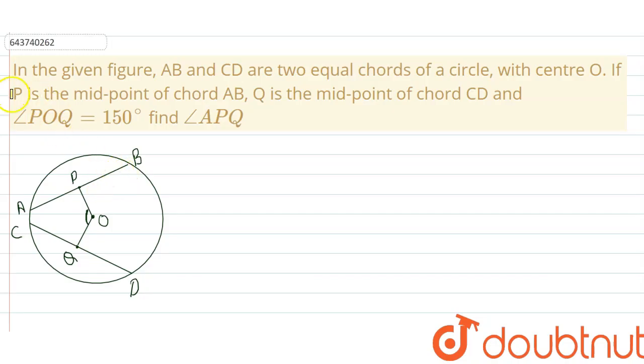Hello student, in this question, in the given figure, AB and CD are two equal chords. This is important to note that chords are equal of a circle with center O. If P is the midpoint of AB, P is midpoint of AB and Q is midpoint of CD. Okay, then angle POQ is given 150 degrees. We have to find angle APQ.